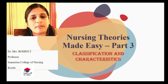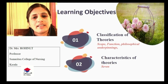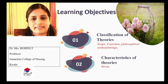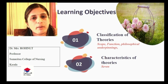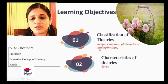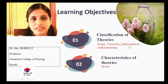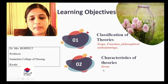In today's session we are going to discuss about Nursing Theories Made Easy Part 3, regarding the classification and characteristics. The learning objectives are: first, to study in detail about the classification or level of theories under three headings — based on scope, based on function, and philosophical underpinnings. The second objective is to be clear about the seven characteristics of theories.